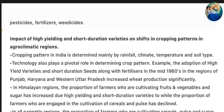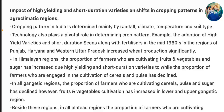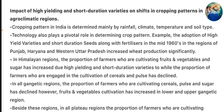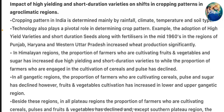Impact of high-yield and short-duration varieties on shifts in cropping patterns in agro-climatic regions: Cropping pattern in India is determined mainly by rainfall, climate, temperature, and soil type. Technology also plays a pivotal role in determining crop pattern. For example, the adoption of high-yield varieties and short-duration seeds along with fertilizers in the mid-1960s in Punjab, Haryana, and Western Uttar Pradesh increased wheat production significantly. In Himalayan regions, the proportion of farmers cultivating fruits and vegetables and sugar has increased due to high-yielding and short-duration varieties.